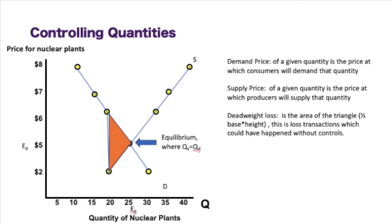And how do we figure out how much deadweight loss we get from the government saying that they only want 20 nuclear power plants as opposed to letting the market decide? You get that by doing the triangle formula, which is half base times height. Now, the deadweight loss is all the lost transactions that could have happened without the control that was in place.